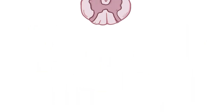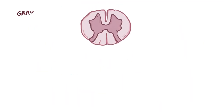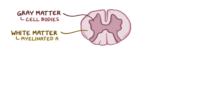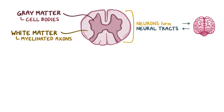The spinal cord is composed of both gray and white matter. Gray matter consists of cell bodies; it's in the middle of the spinal cord and is shaped like a butterfly. Surrounding the gray matter is white matter, which consists of the myelinated axons of various neurons. The neurons in the spinal cord form different neural tracts that carry information to and from the brain.